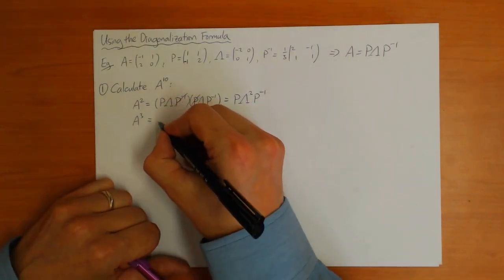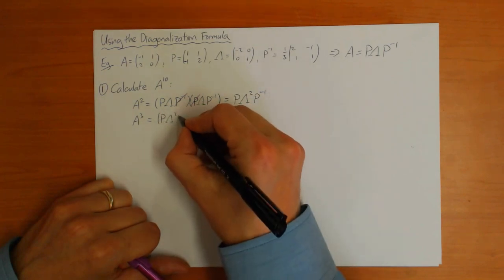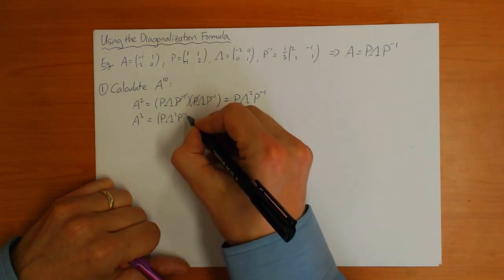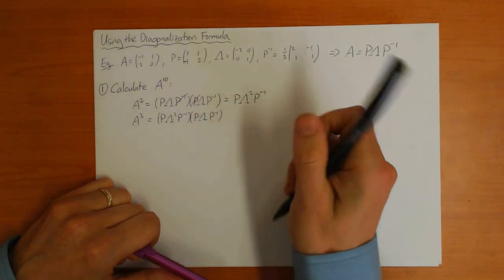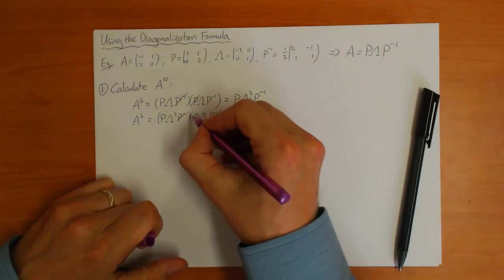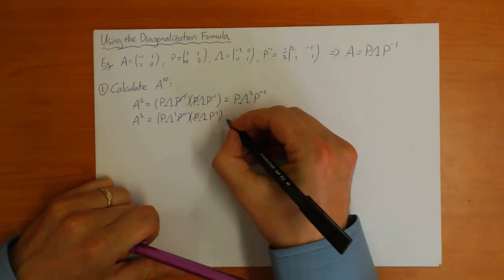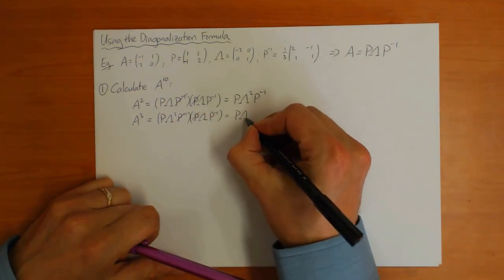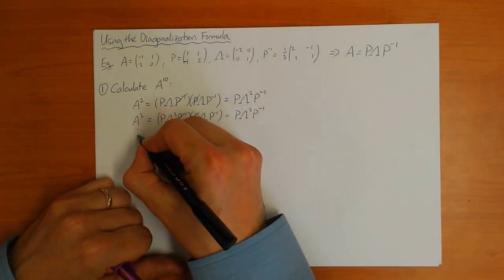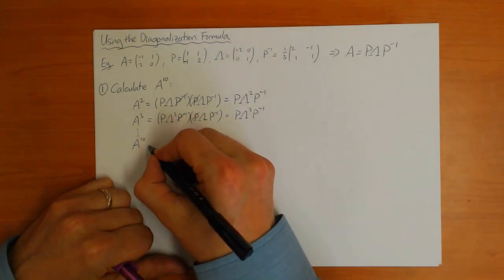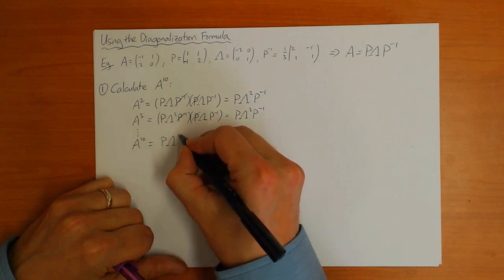Similarly, A cubed is A squared times A, which is P Lambda squared P-inverse times P Lambda P-inverse. Again the P's in the middle cancel, so this is P Lambda cubed P-inverse. And hopefully you see the pattern now: A to the power 10 is going to be P times Lambda to the power 10 times P-inverse.